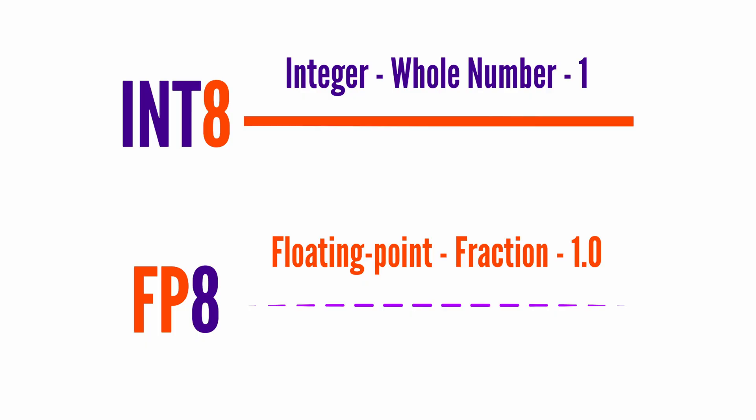When AMD accidentally leaked the FSR 4 SDK, it also contained a shader library with a data format called INT8, which stands for 8-bit integer. INT8 calculates whole numbers only — it's faster and it'll work on older hardware's compute units, but it doesn't look as good.